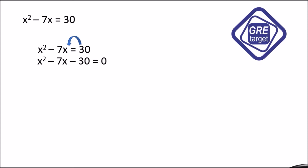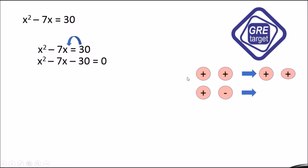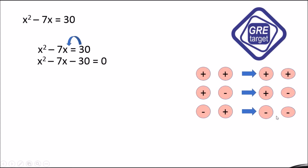Now we will take a look at the two signs. If both signs are positive, we will get two positive answers. If we have positive and negative, we will get positive and negative answers. If the signs are positive-negative-positive, we will get both negative. If both are negative, we will get one negative and one positive value.